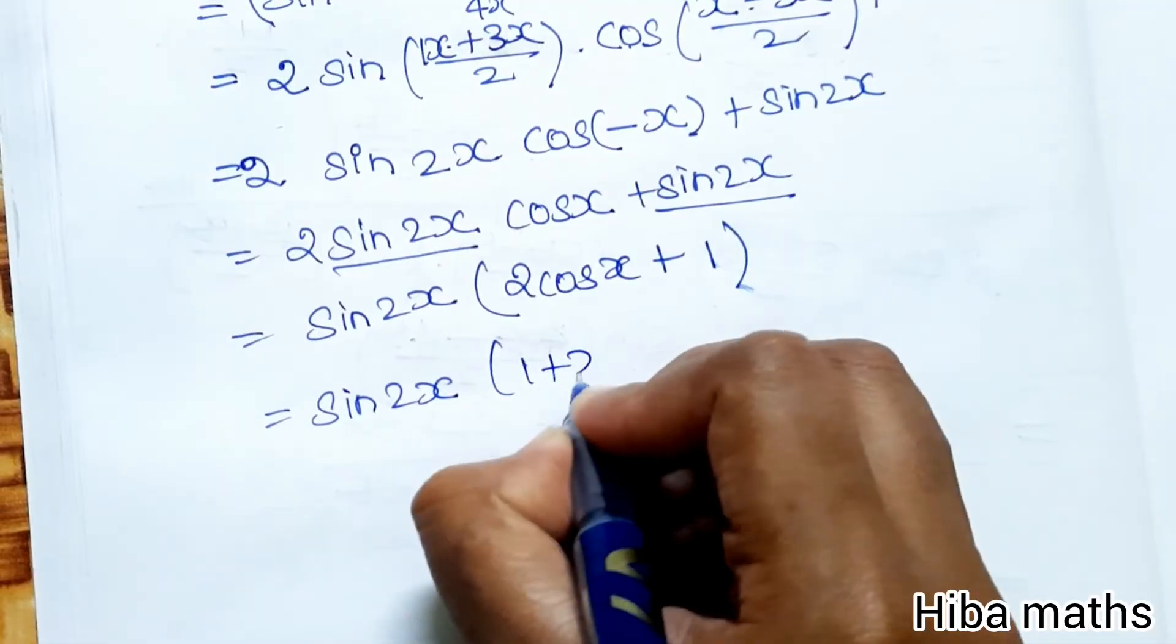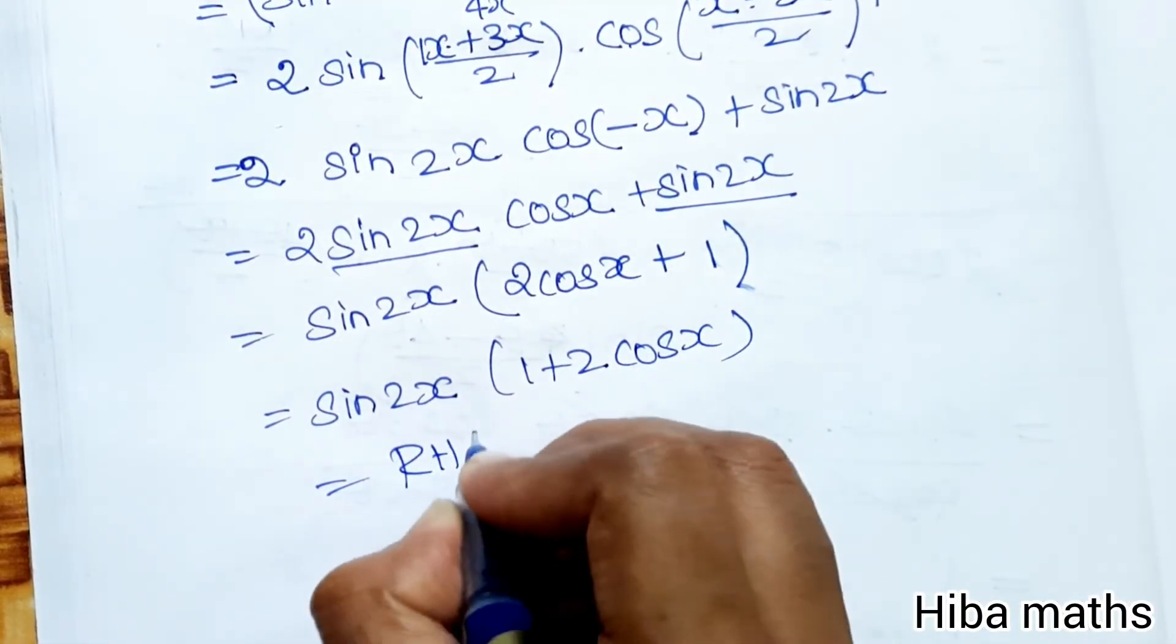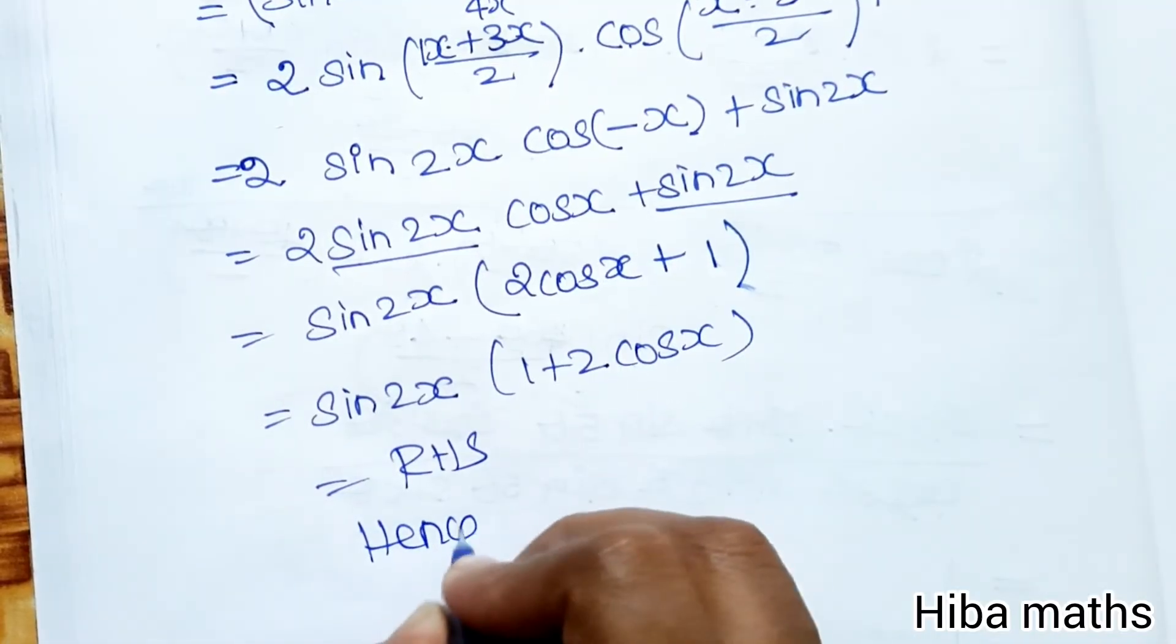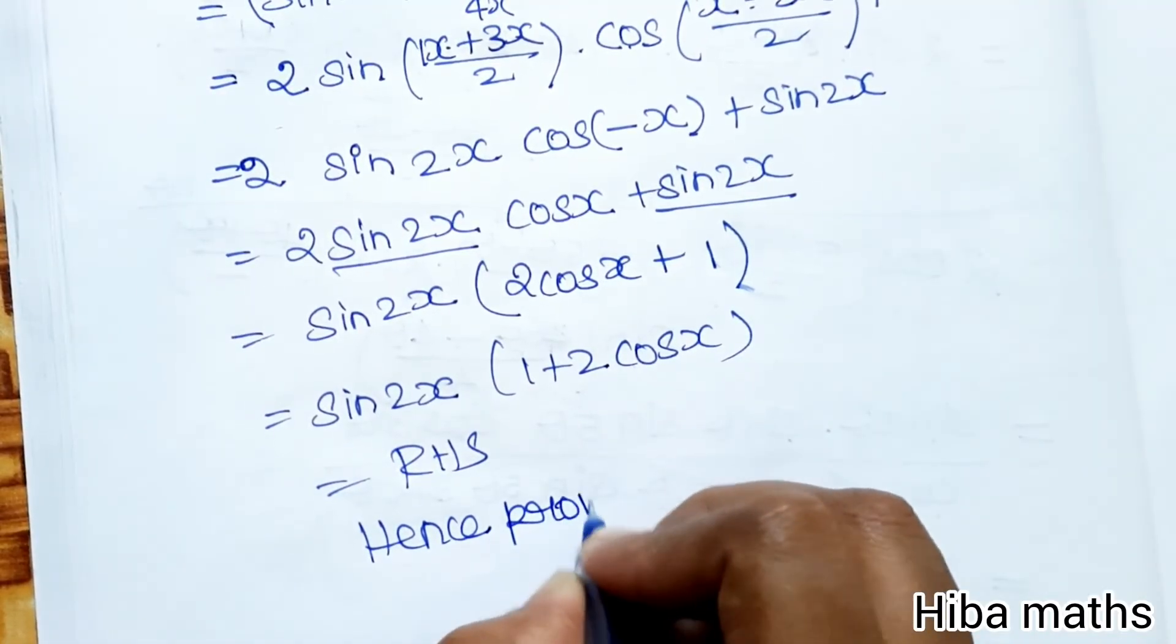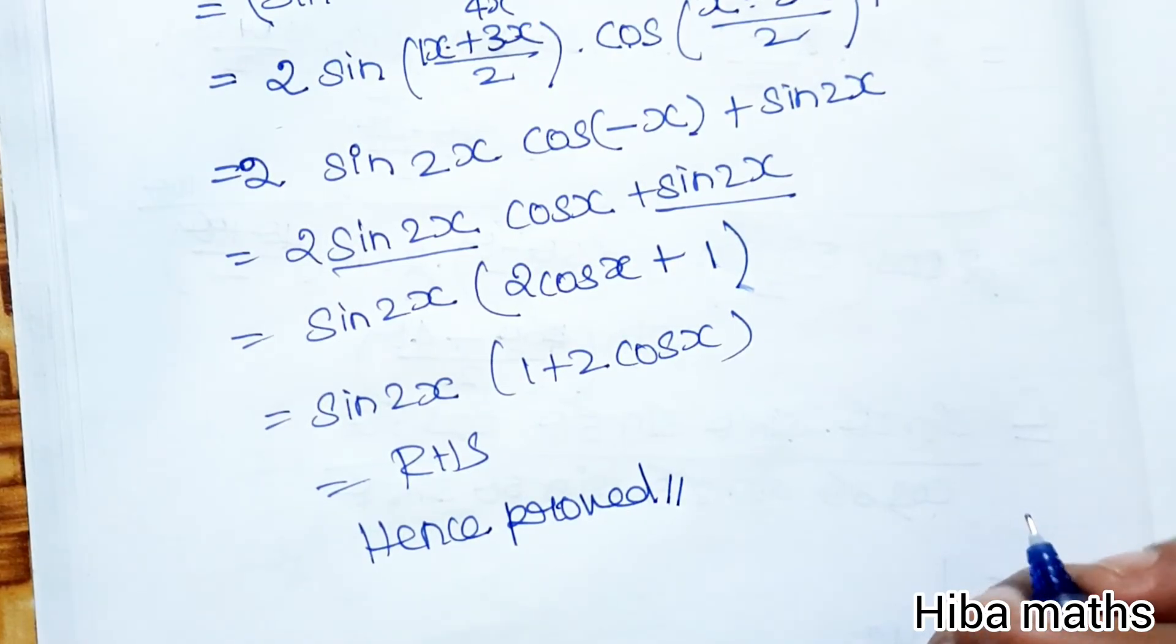sin 2x (1 + 2 cos x) equals RHS, hence proved. Finished. Hope everyone understands. If you have any doubts, comment below. Thank you so much for watching.